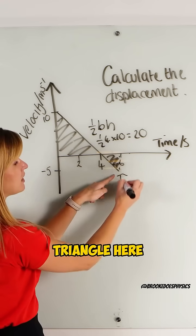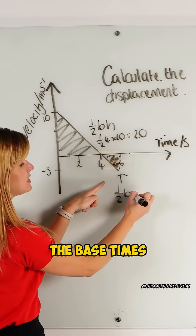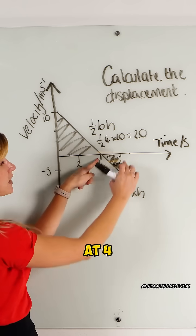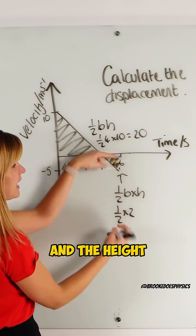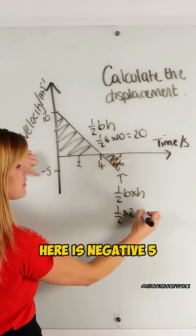Whereas here I've got a triangle here and what we'll do is half of the base times the height. So it starts at 4 and ends at 6, so my base there is a half times by 2, and the height here is negative 5.